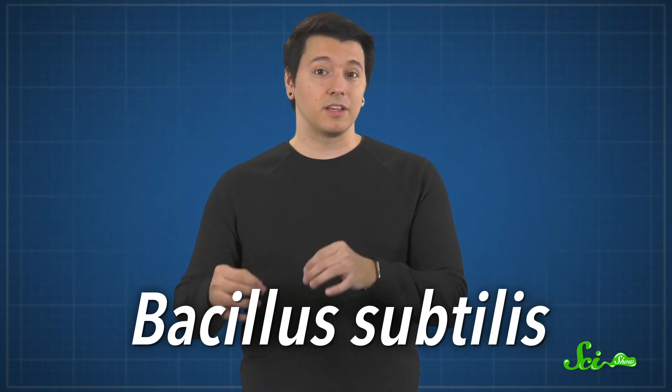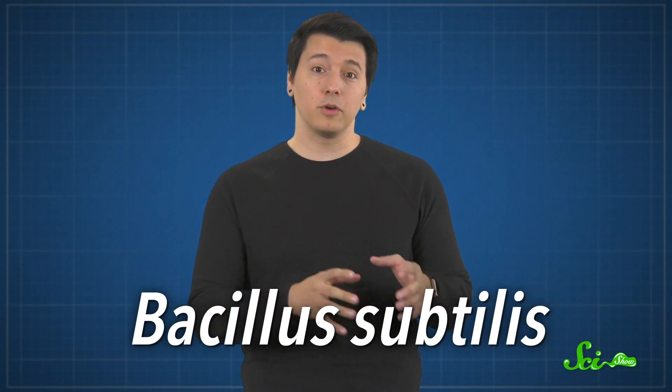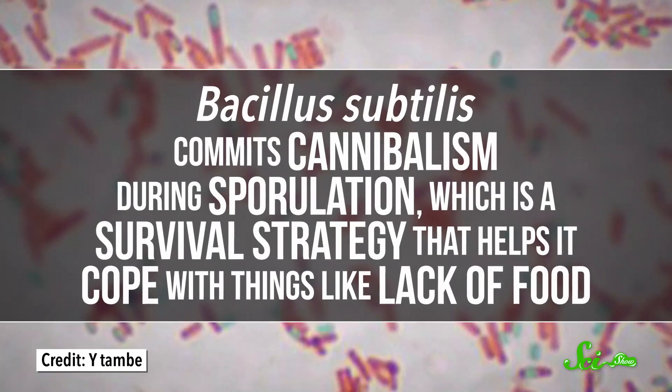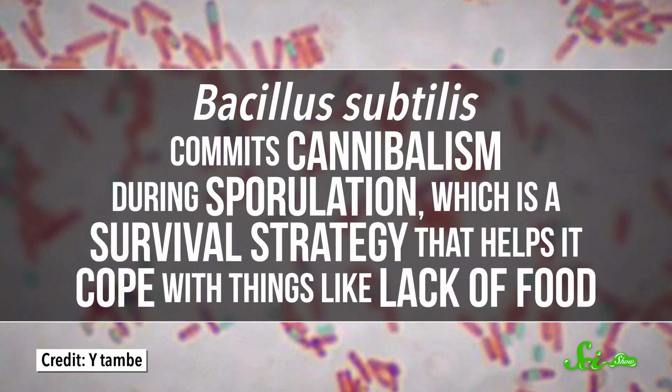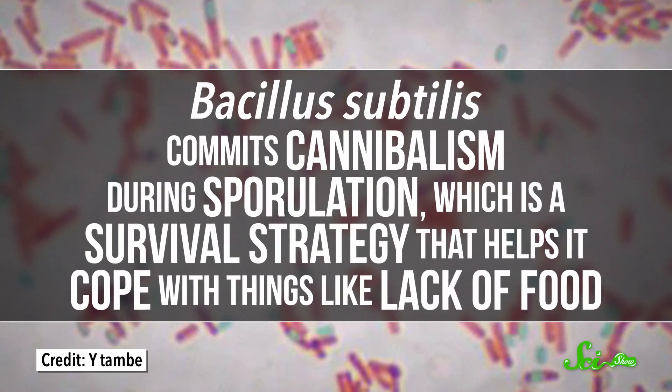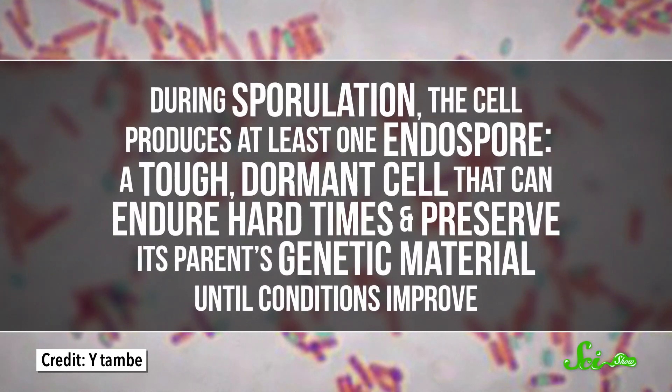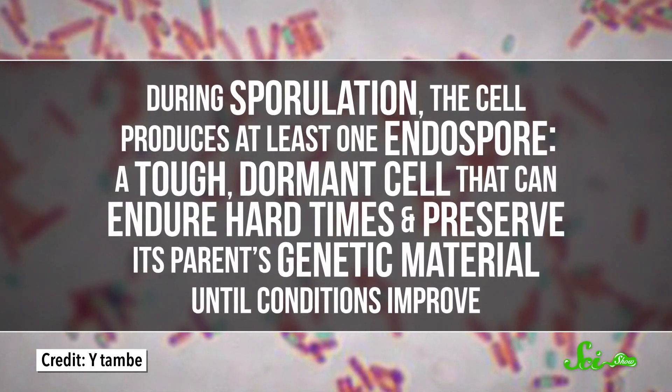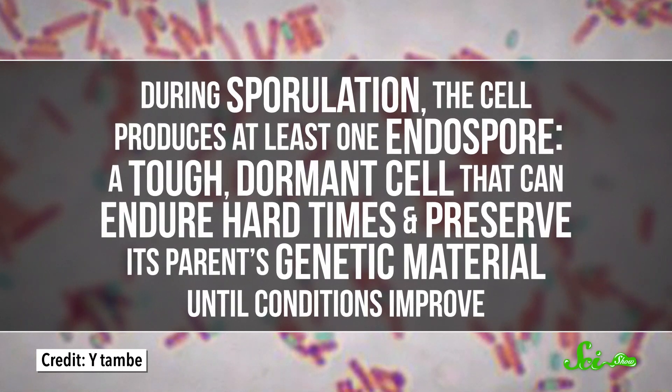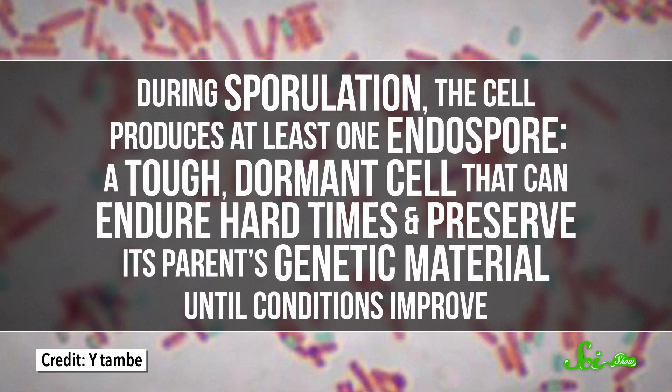Bacillus subtilis, a non-pathogenic bacteria found in soil and vegetation, does things a little differently. It commits cannibalism during sporulation, which is a survival strategy that helps it cope with things like lack of food. During sporulation, the cell produces at least one endospore, a tough, dormant cell that can endure hard times and preserve its parent's genetic material until conditions improve.